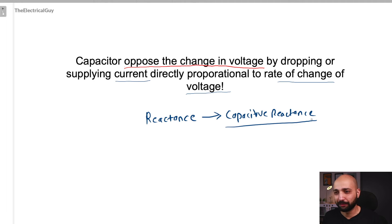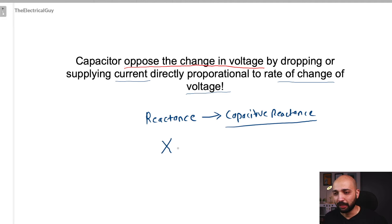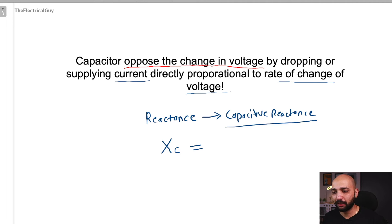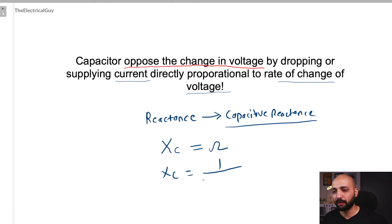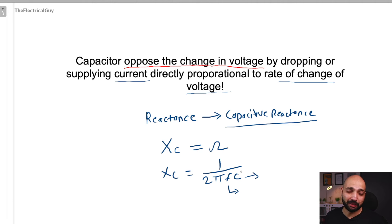Reactance is denoted by the letter X. Since it is offered by a capacitor, we write C at the subscript, so the notation for capacitive reactance is Xc. This is also measured in ohms, just like resistance and inductive reactance. Calculating the capacitive reactance is also very easy — the formula is Xc = 1 divided by 2πfc, where f is the frequency and C is the capacitance of the capacitor.